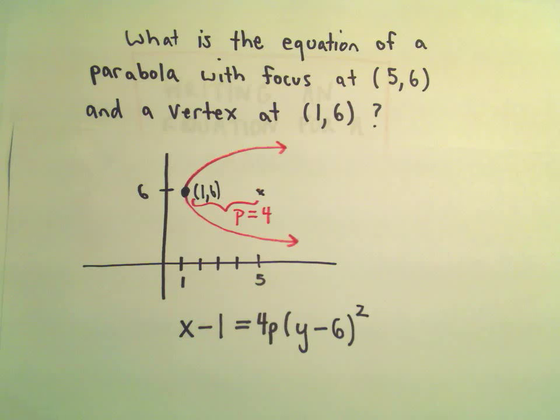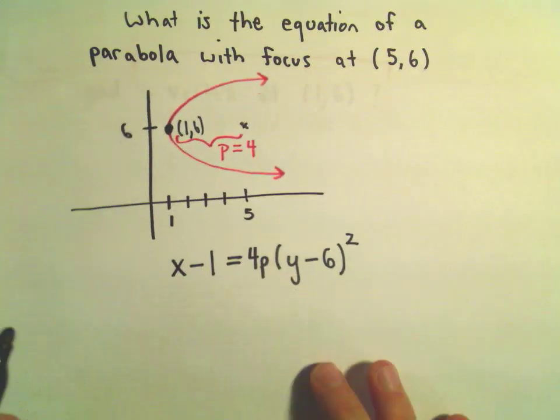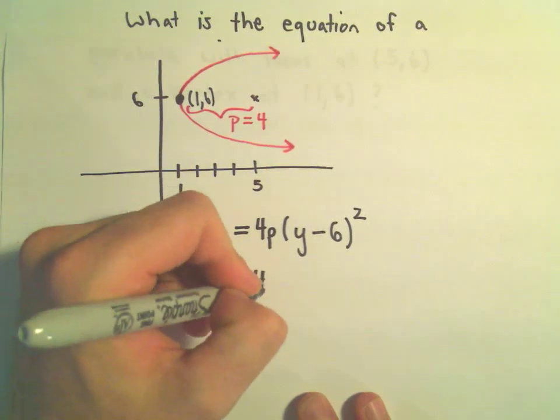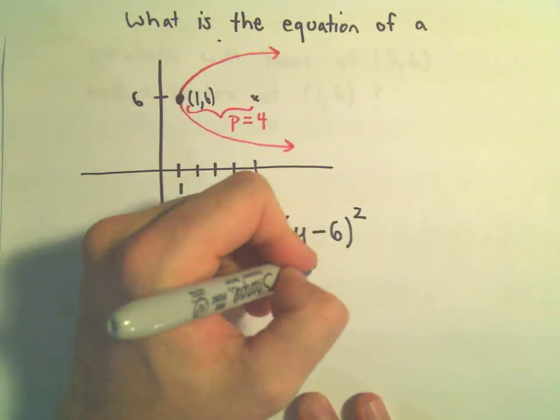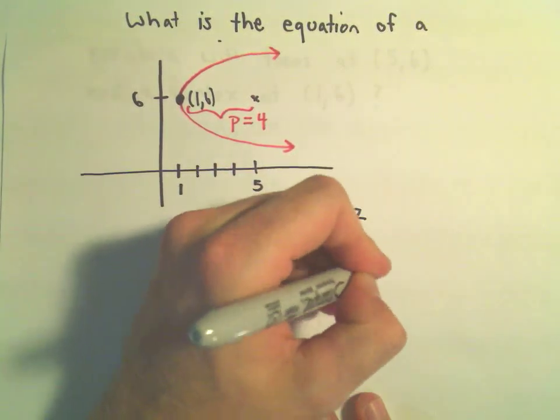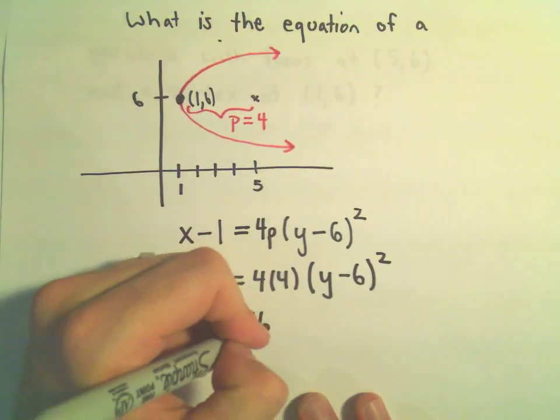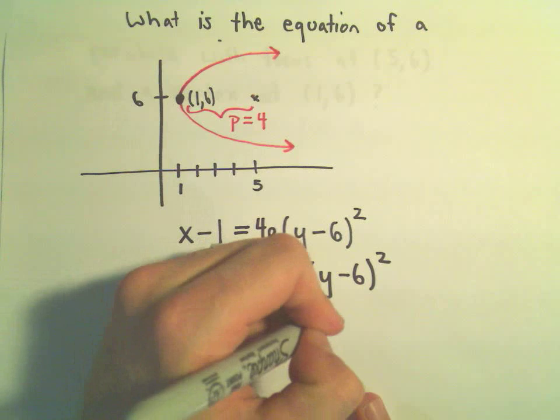We would have to move over 4 units. So the equation of this parabola, then, would just be x minus 1 equals 4 times 4 times y minus 6 squared. So we'll get x minus 1 equals 16 times y minus 6 squared.